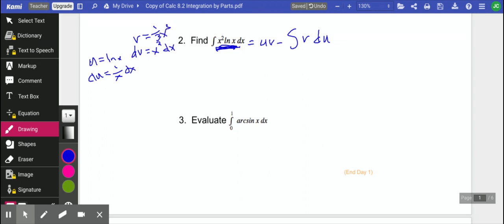So at least we could do both of those. All right, so u was natural log of x. v was 1 third x cubed.